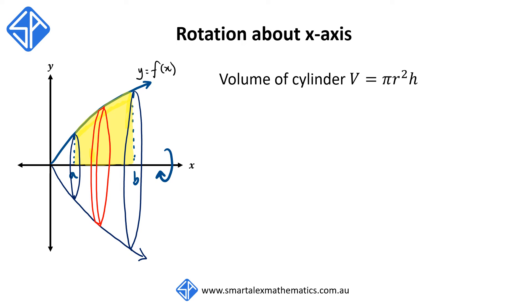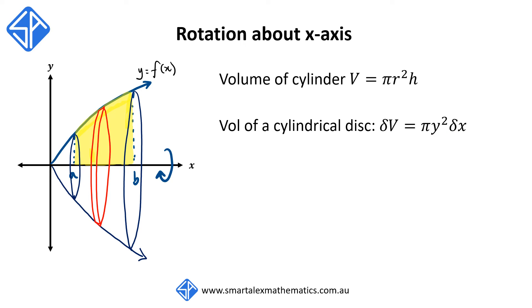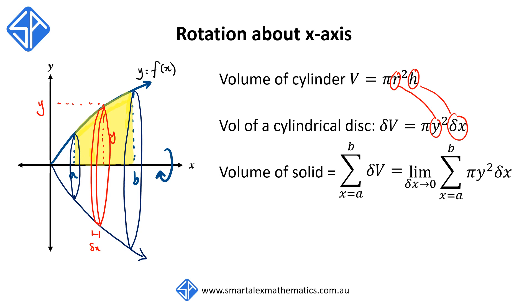Recall that the volume of a cylinder is given by the formula V is equal to pi r squared times h. The volume of a cylindrical disk, we can call it delta v, is given by pi times y squared times delta x. This time the variable r gets replaced by y because the radius of each disk is given by the y value of the function at each different value of x. h gets replaced by delta x because delta x is that small increment along the x-axis which represents the height of each disk. Then to get the volume of the solid, we sum up all these delta v's going from x is equal to a to b. Delta v gets replaced by the expression pi times y squared times delta x.